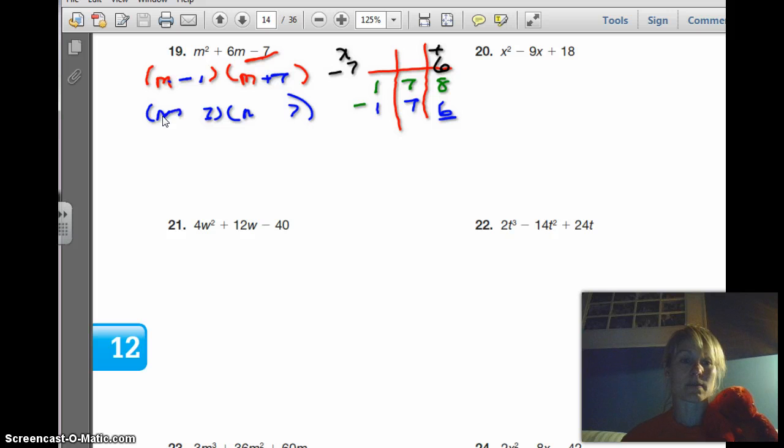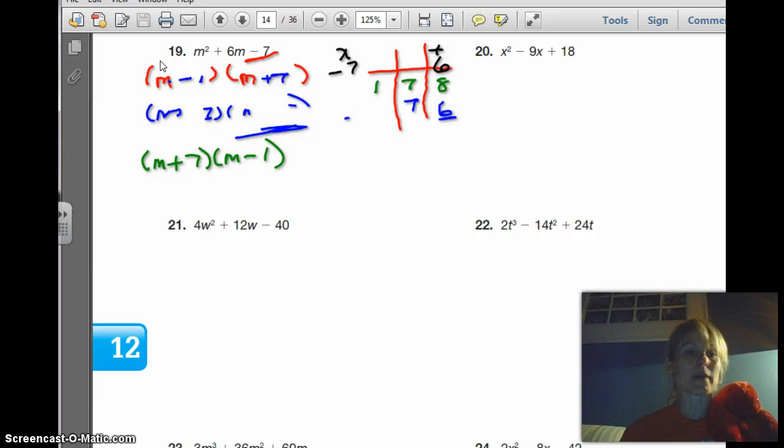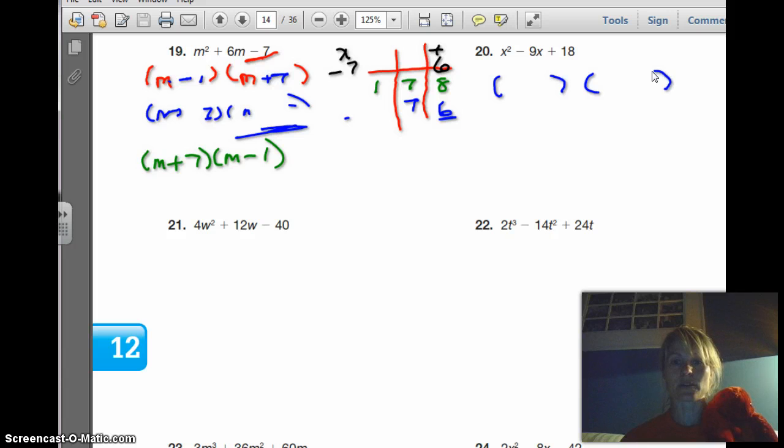So I know that negative 1 and 7 will work. And it doesn't matter. You could put the negative 1 here and then the positive 7 here. Or we could have m plus 7 and then m minus 1. Either way, but we have m times m, which is m squared. 1 times negative 7 is negative 7. And then we'll have 7m and negative 1m. And I did that wrong because it's got to be positive 6m. My signs aren't right here. See, it's a good thing I checked. So I can have m minus 1 times m plus 7 or I can do m plus 7 times m minus 1. It doesn't matter which one of those factors you put first as long as the plus and the minus are in the same spot.